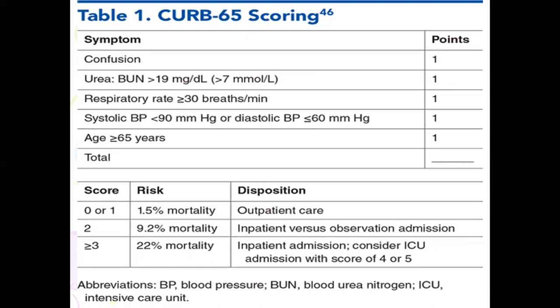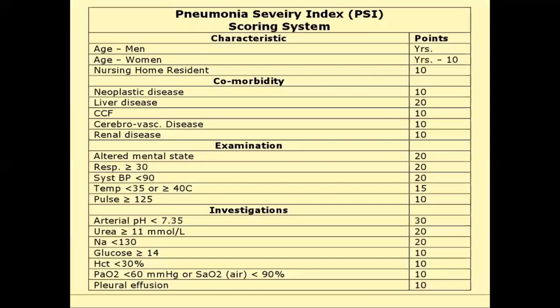If the CURB-65 score is 0 or 1, treat the patient on an outpatient basis with oral antibiotics. If the score is 2, weigh whether to do inpatient treatment or observational admission. If the score is 3 or more, always treat in hospital, and consider ICU admission if the score is 4 or 5. This score also gives you the predicted mortality percentage. The second scoring system is the Pneumonia Severity Index.